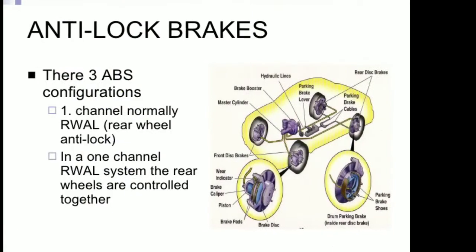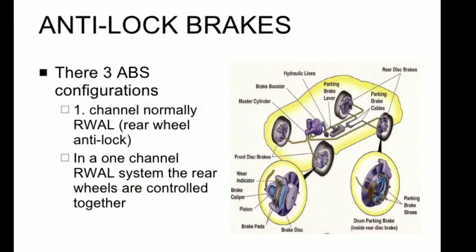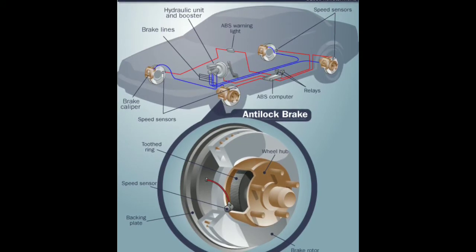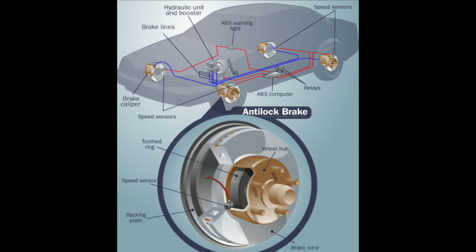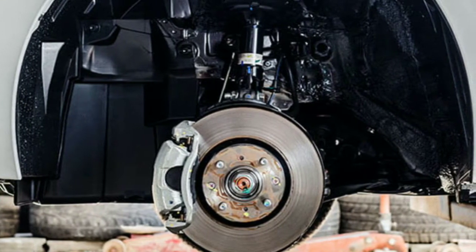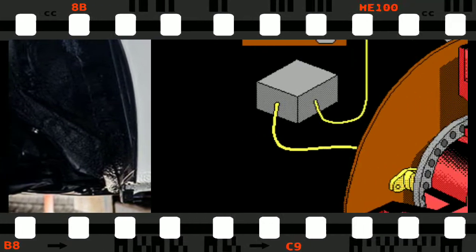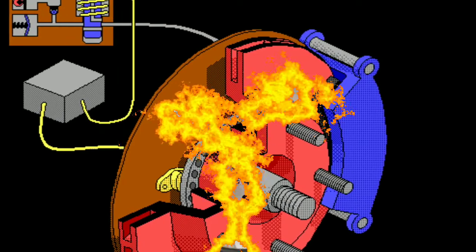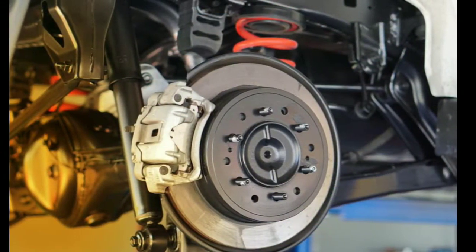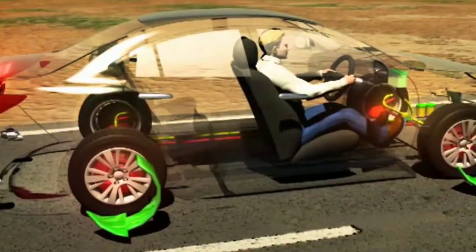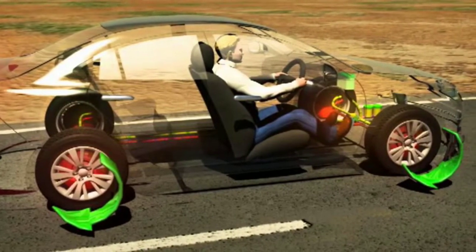ABS brake malfunctions. Given the importance of the ABS brake system in preventing slips and accidents, it is necessary to mention the malfunctions of this system. This system, which is vital for your safety, must be monitored correctly. The information display on vehicles gives a signal to the driver when the system malfunctions. As soon as you see this signal, it is useful to go to the authorized service. In some cases, even if the fault signal is active, the system can continue to operate, which causes drivers to delay going to the service. However, you do not know if the failure will reach a much more serious level, so you should immediately go to the authorized service.